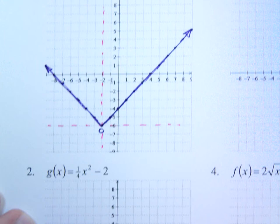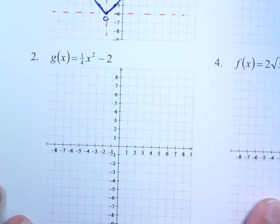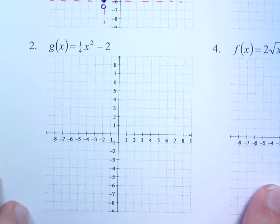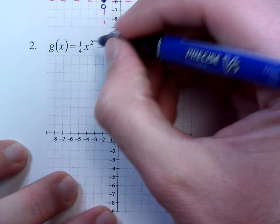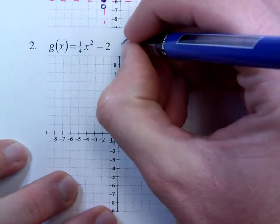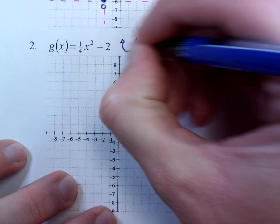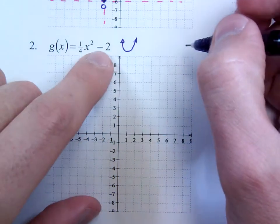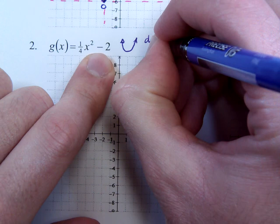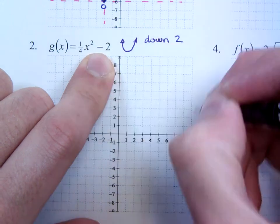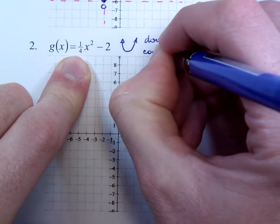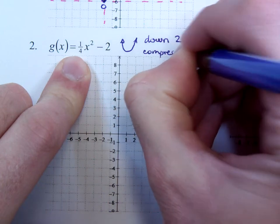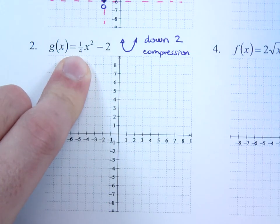Alright, let's look at the second one. g(x) = (1/4)x² - 2. When I think about the shape here, the square tells me that it should be a parabola. The minus 2 tells me that I'm moving down 2 units. And the 1/4 tells me that I have a compression.